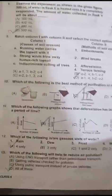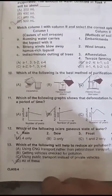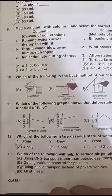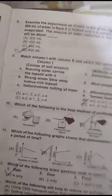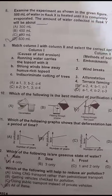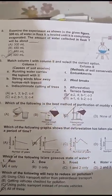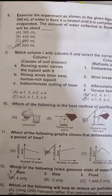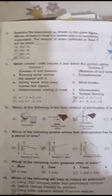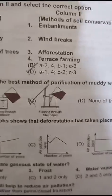Match column one with column two and select the correct option. Running water carries the topsoil with it — this matches embankments and terrace farming, so A matches 1 and 4. Strong winds blow away the topsoil — B matches 2. Indiscriminate cutting of trees is deforestation — C matches 3. So the correct option is option D: A-1 and 4, B-2, C-3.